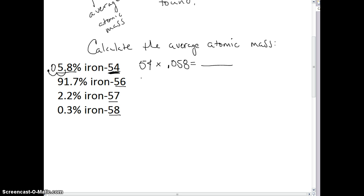We're going to do the same thing here. We're going to take its mass, and we're going to multiply it by 91.7%. Move that decimal two places to the left, one, two. And we're going to get 0.917, and we get an answer. Same thing is going to happen here, 57 multiplied by 0.022, moving that decimal two places to the left. And here, 58 multiplied by 0.003. And we're going to get an answer there as well.